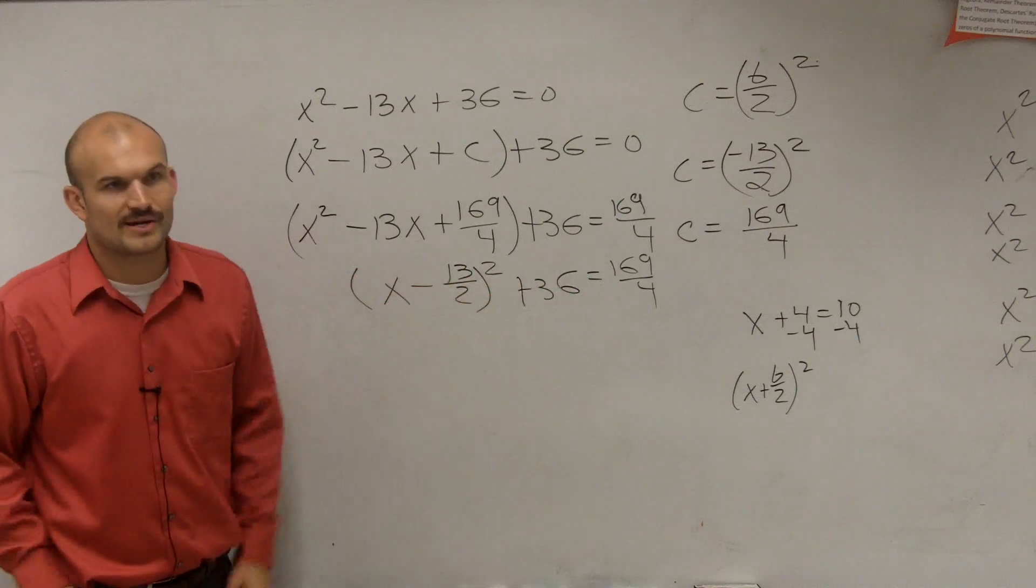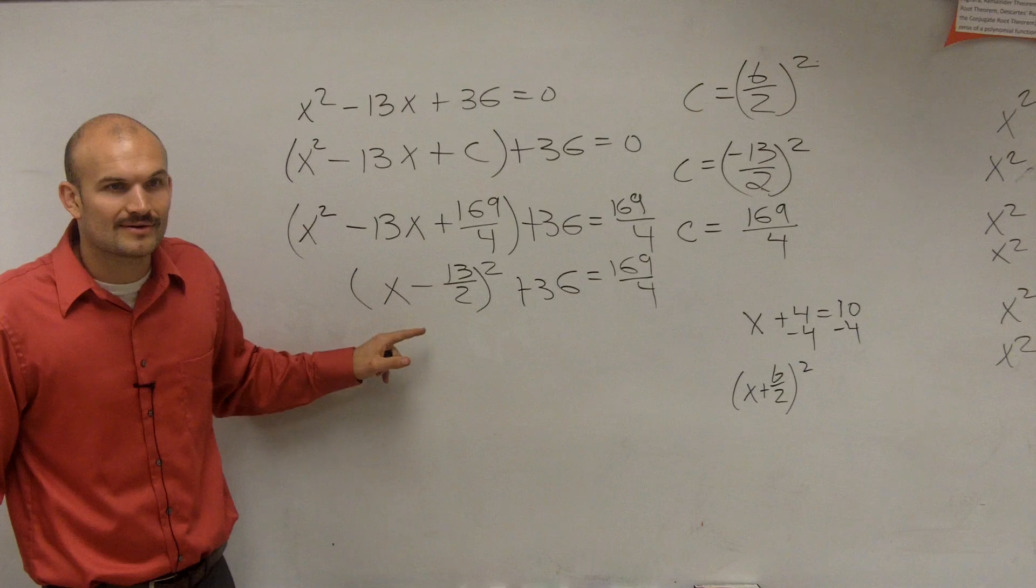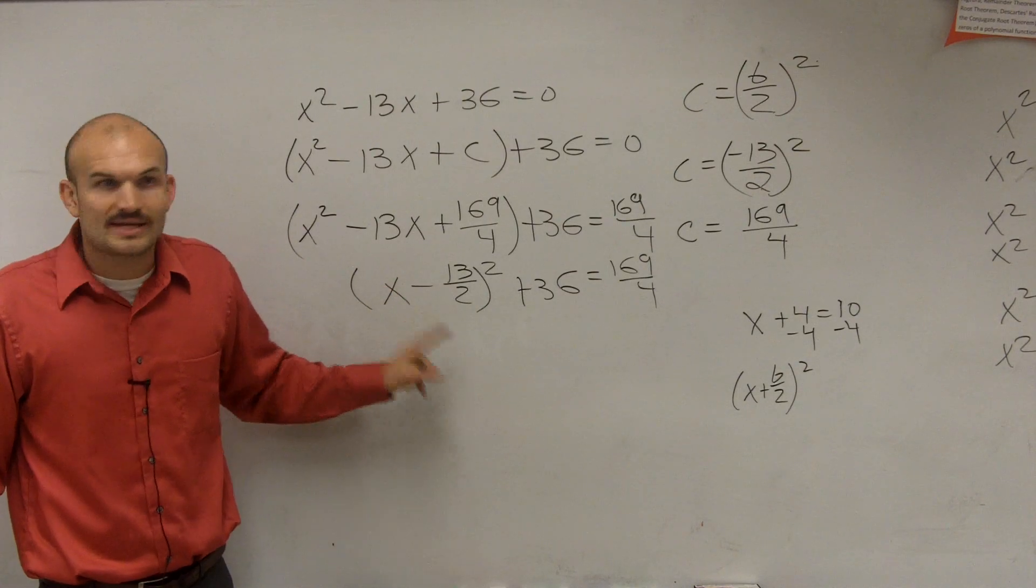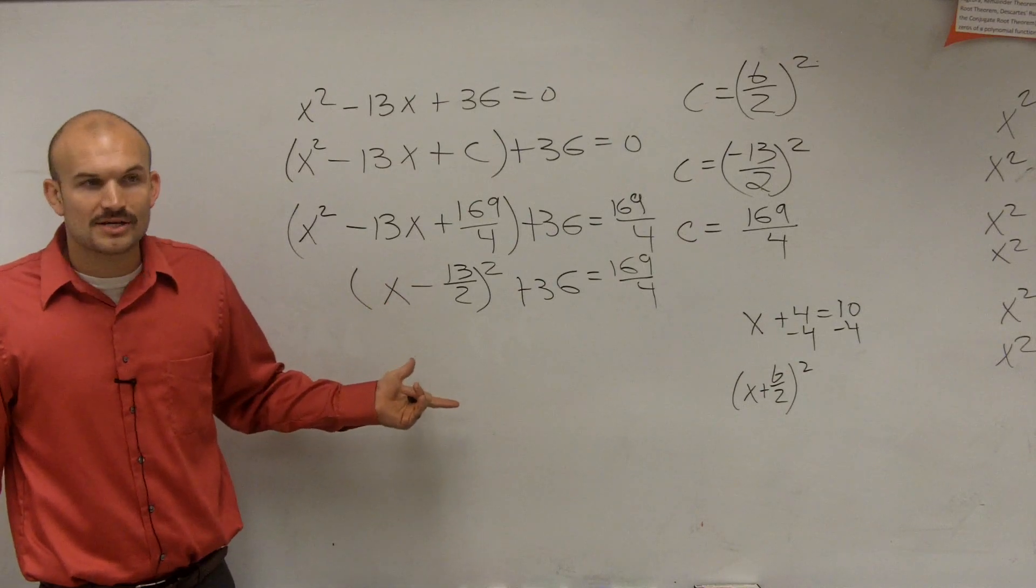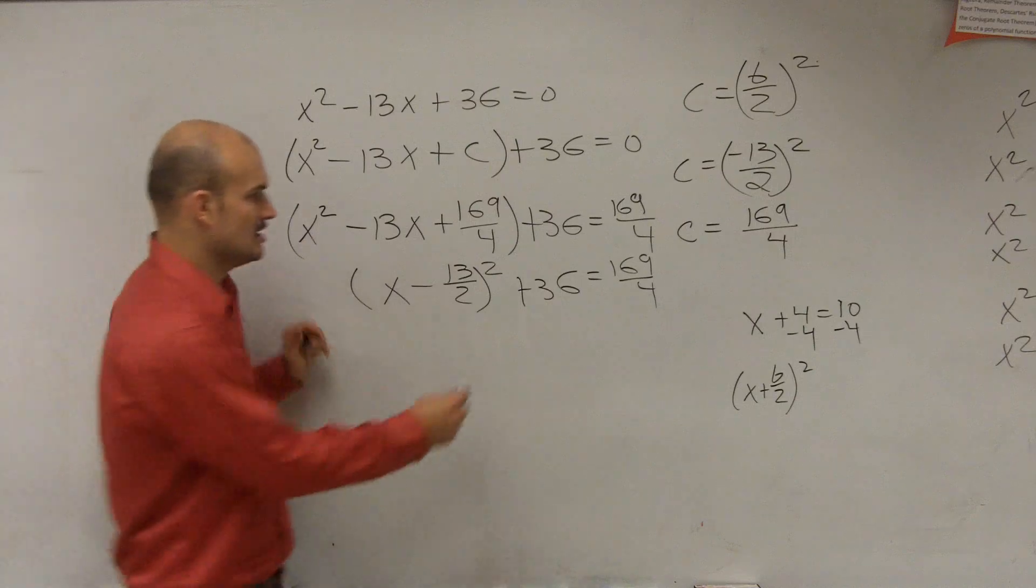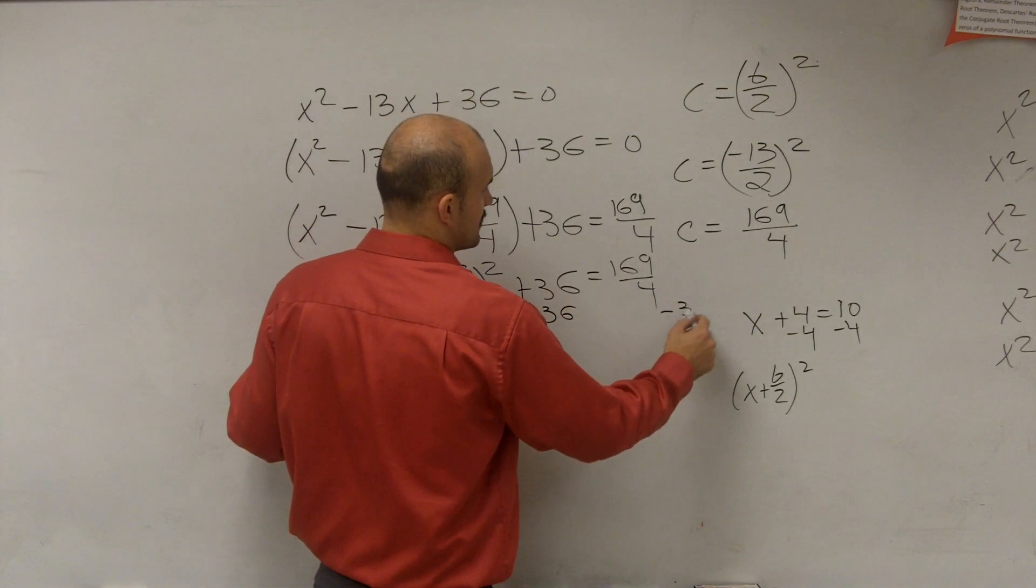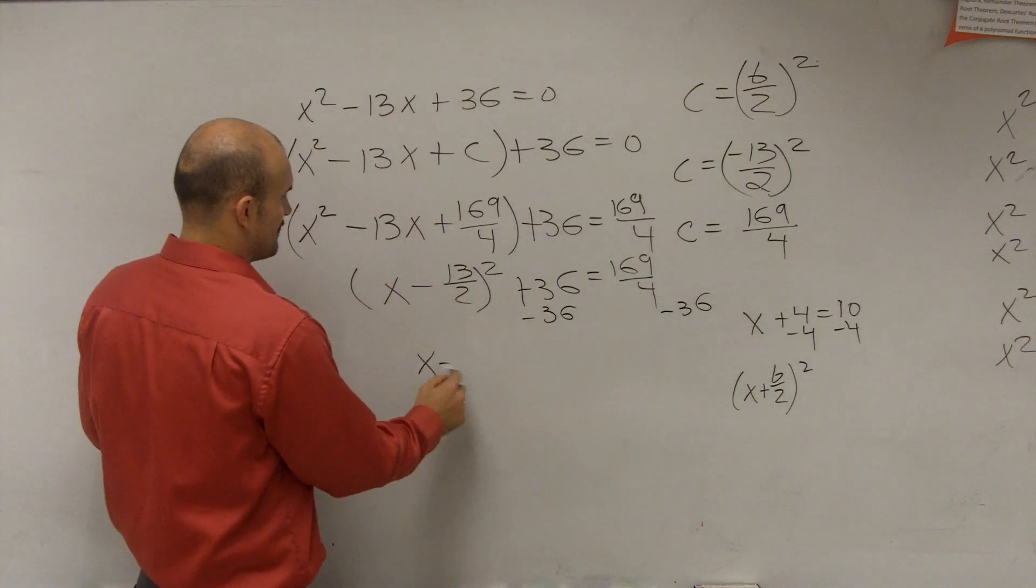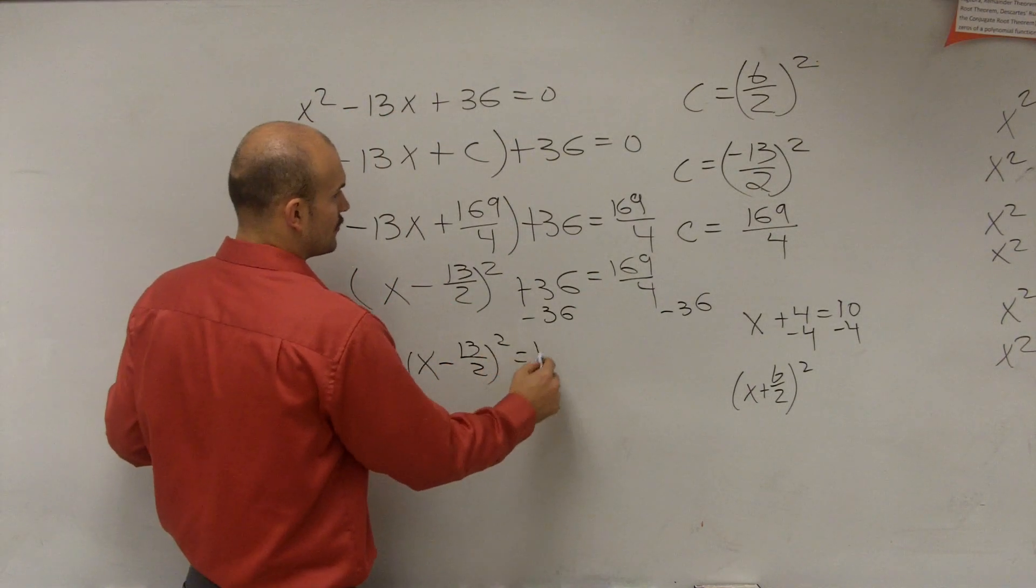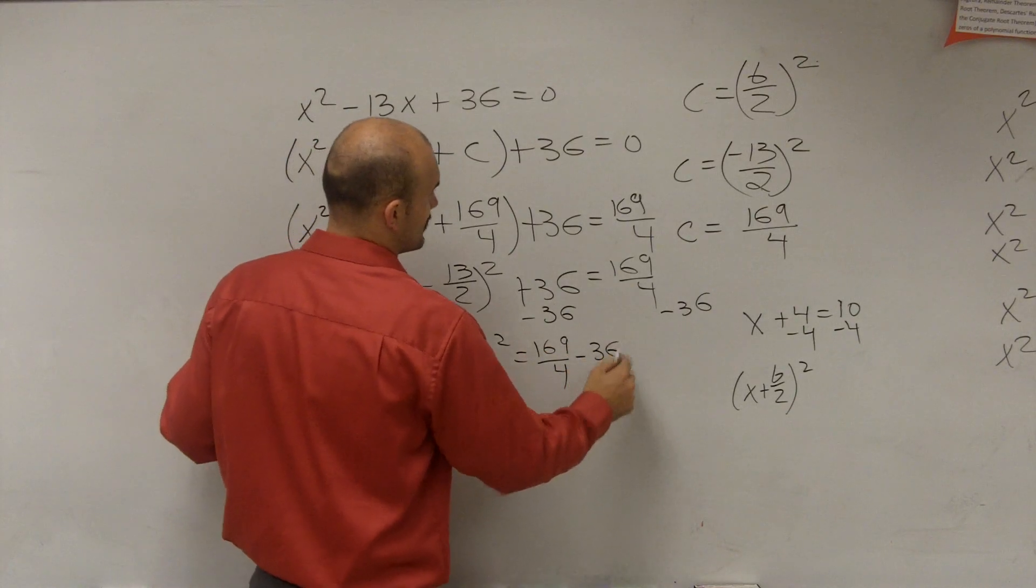So now you guys have this crazy equation. Well, guess what? We only have one x value. So therefore, since we know we only have one x value, we can now solve for x by using inverse operations. We don't need to factor this. We just need to use inverse operations. So the first inverse operation I'm going to do is subtract 36 on both sides. So I have x minus 13 divided by 2 squared equals 169 divided by 4 minus 36.